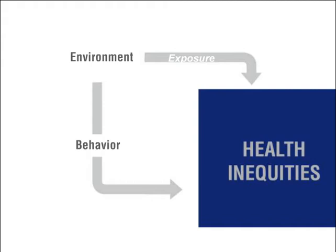Focus on the arrow to the right. It shows that factors in the community environment, such as clean air, water, and soil, directly influence health outcomes through exposures. Unhealthy exposures, for example, can result in respiratory or waterborne illnesses. Such exposures are more often found in low-income communities and communities of color.